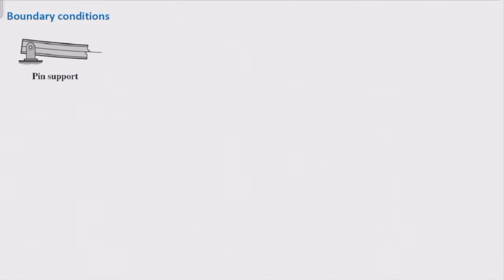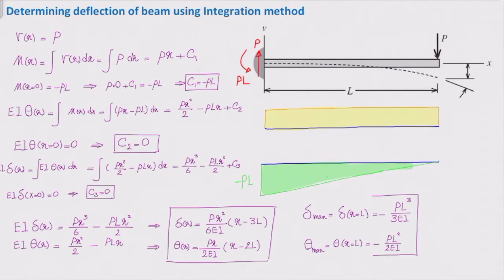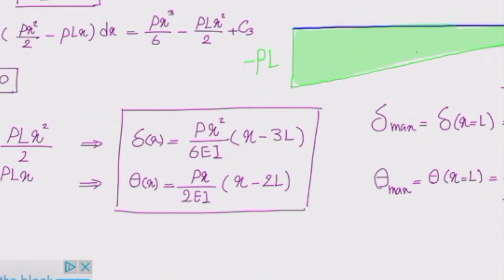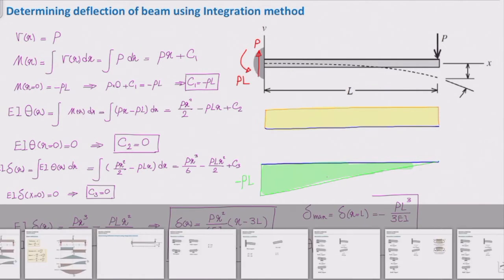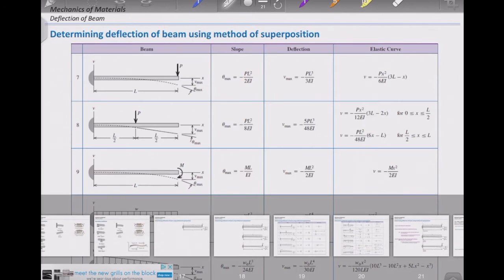This is the problem that we solved using the integration method, and as you see, the function that we come up with is this one, px squared over 6EI times x minus 3L, and the maximum deflection is PL cubed over 3EI. If we get back to that table, we will see the same function for that loading.